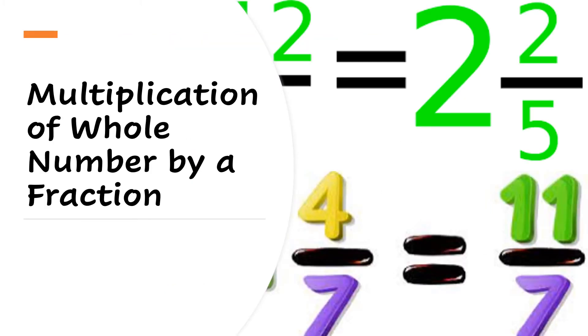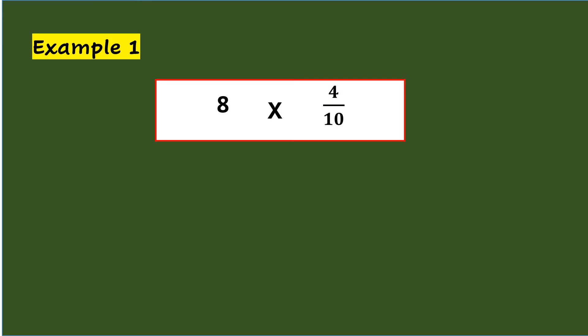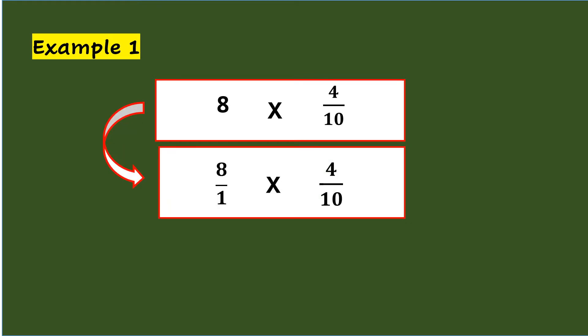Multiplication of a whole number by a fraction. When multiplying a whole number by a fraction, like in Example 1, 8 times 4 tenths, the first step is to change the whole number to a fraction using the denominator of 1.